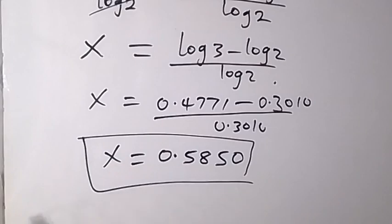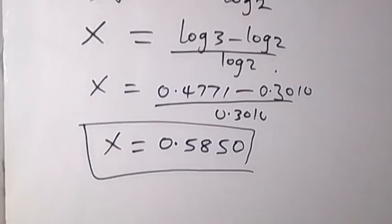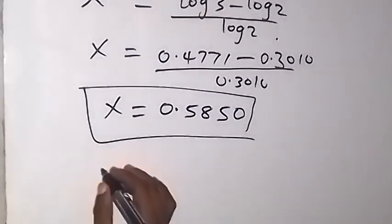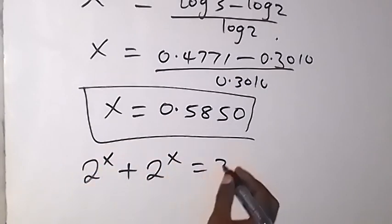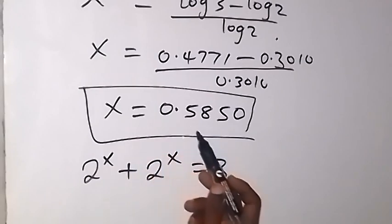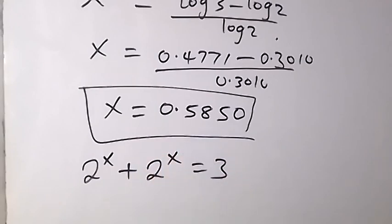And when we put the value of x into the equation given, that is 2 raised to the power of x plus 2 raised to the power of x equals 3, where our x equals 0.5850. So let's put the value of our x in to check whether the left-hand side will be equal to the right-hand side. So we have come to the end of this class.